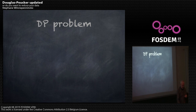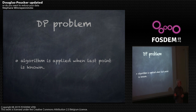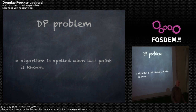Douglas-Peucker has one problem — maybe more than one — but this is the annoying one. You have to apply the algorithm only when you know your last point. So if you imagine you are tracking with a GPS your trip to the south of France, you have to wait until you are at your destination point to start reducing your number of points. If you have a small device, you may have already exceeded your maximum memory.